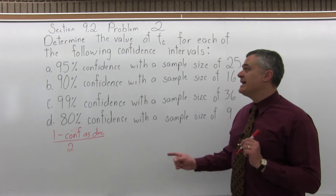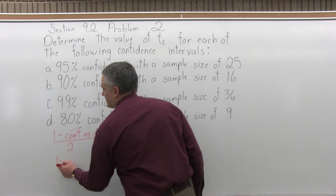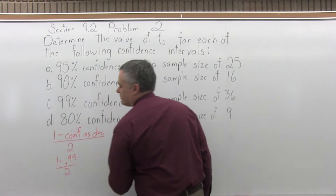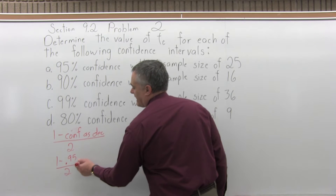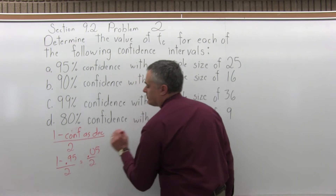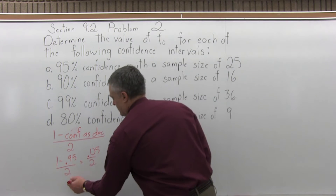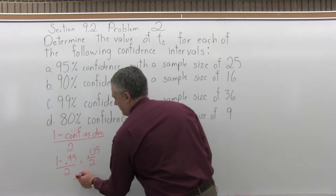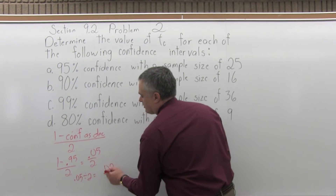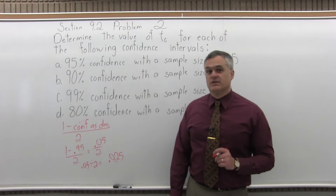The column that you look for is 1 minus the confidence as a decimal over 2. So for 95% confidence, that would be 1 minus 0.95 over 2. So 1 minus 0.95 is 0.05, divided by 2, which gives you 0.025. So that's the column: 0.025.